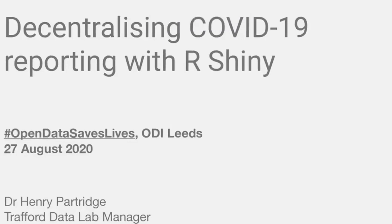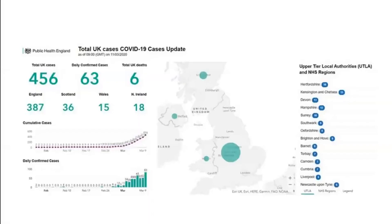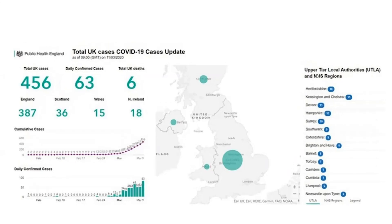So it's called Decentralizing COVID-19 Reporting with R Shiny. So you probably remember this from March, April time. This is the official dashboard produced by Public Health England, created in ArcGIS. As far as it goes, it's fine, it's clear. But we thought maybe we could do better than this.